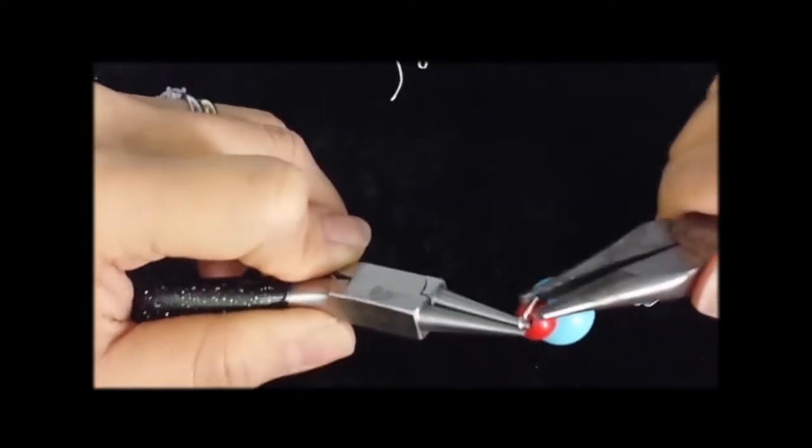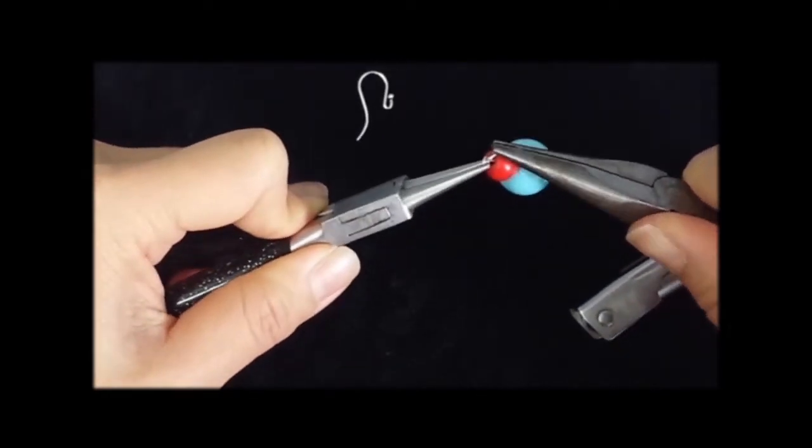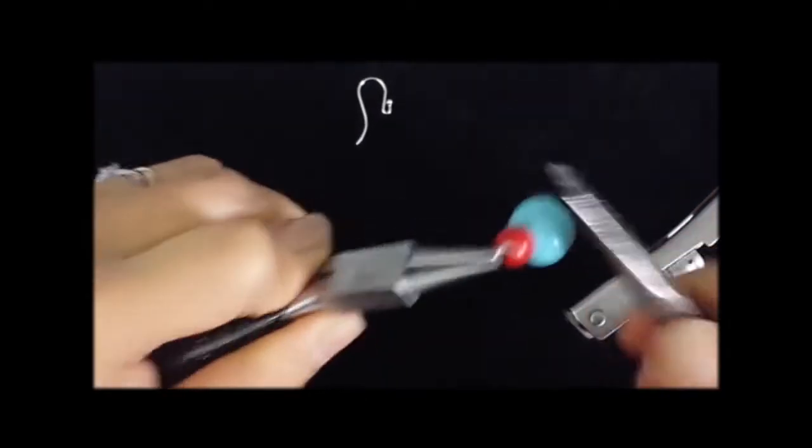Then using a flat nose plier, rotate the remaining wire of the pin a couple of times to turn it into a mini spiral.